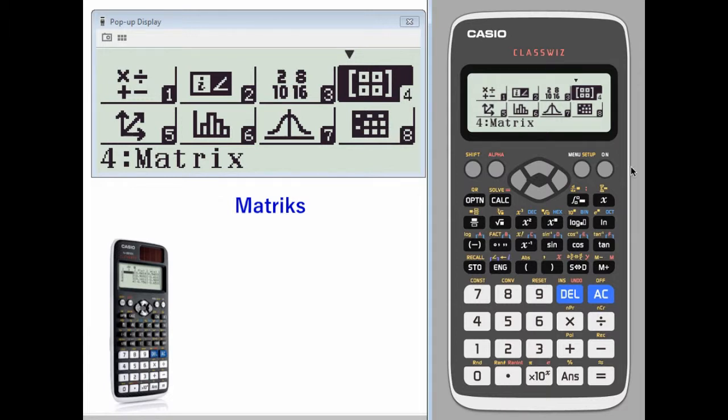Basic matrix operations. The matrix menu is item 4. You can either highlight item 4 or press 4.